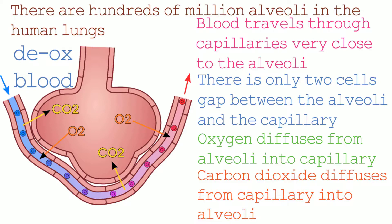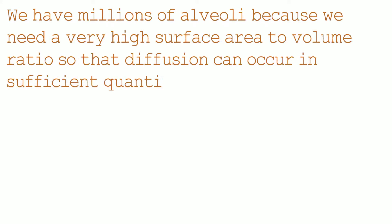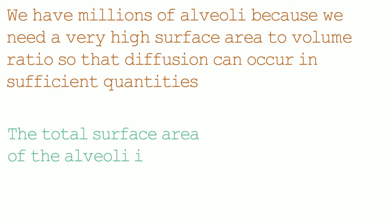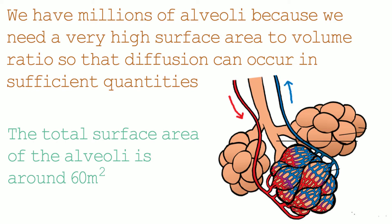This results in blood in the capillaries at the end of the alveoli being oxygenated. The oxygenated blood will then travel back to the heart where it is pumped out on the second circulatory system, which is the systemic system. We have millions of alveoli because we need a very high surface area to volume ratio so that diffusion can occur in sufficient quantities to allow us to survive. The total surface area of the alveoli is around 60 metres squared. Furthermore, the alveoli are designed so they have a very large surface area. Here is a 3D diagram of what the alveoli look like.